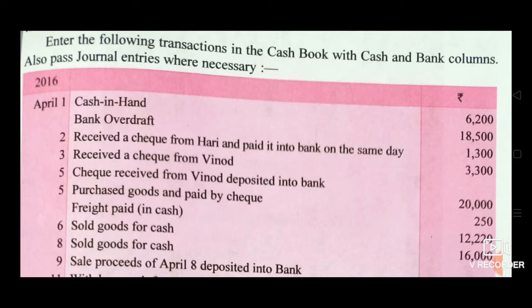April 1st: cash in hand Rs. 6,200 and bank overdraft Rs. 18,500. This is the negative balance of bank. 2nd April: received a check from Hari and paid it into bank on the same day, Rs. 1,300.